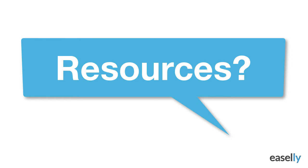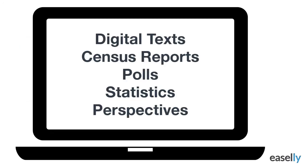What resources outside of To Kill a Mockingbird did your students use for research purposes? They used mostly digital text — things that they would find online: census reports, a lot of polls, statistics. Anything really that was related to the prevalence of the issue, like the definition of the issue, and people's perspectives on their topic and their issue were the biggest things.